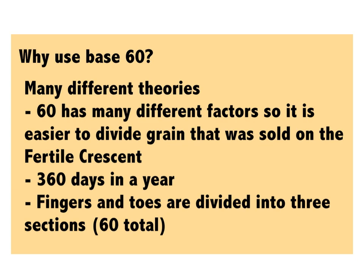Why did they use base 60? There are many different theories, but here are a few examples. One was that 60 has many different factors, so it was easier to divide grain that was sold in the Fertile Crescent. That was the area geographically where the Babylonians lived. Another theory is at that time, the calendar had 360 days in a year, and 60 is a factor of 360.